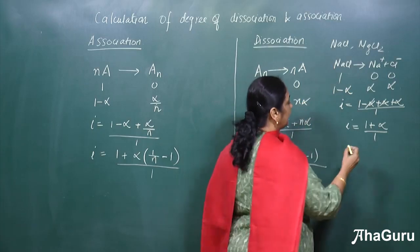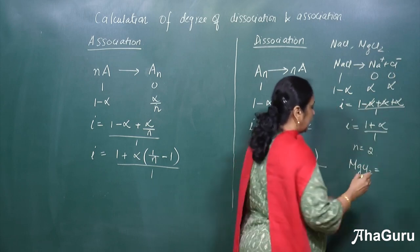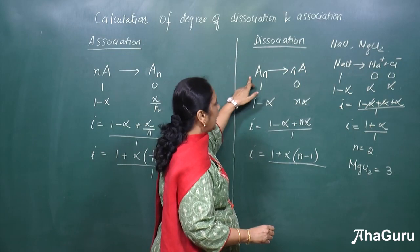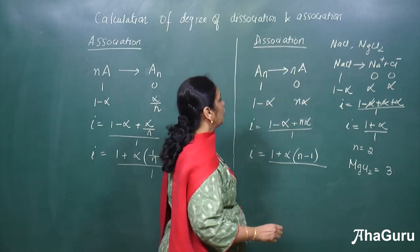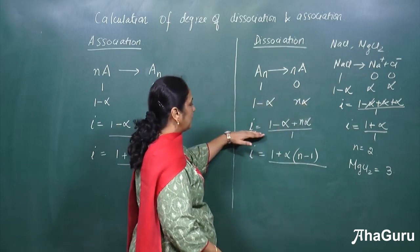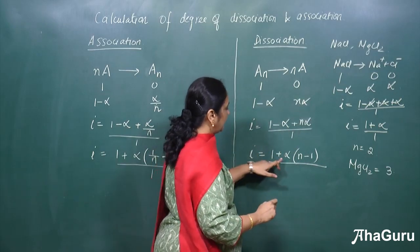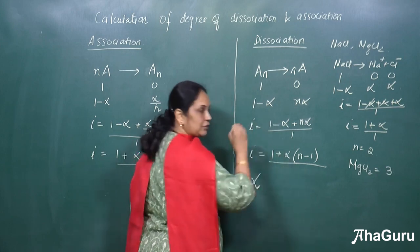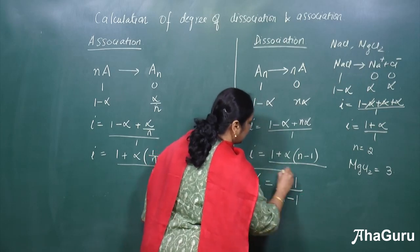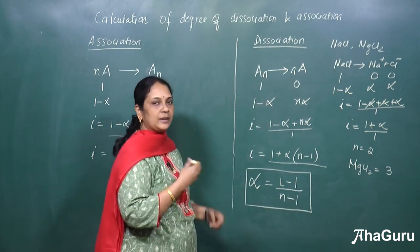For sodium chloride, n = 2 because it dissociates into 2 particles. For MgCl₂, n = 3, and so on. In the generalized form, A molecule dissociates into nA: before dissociation it is 1 and 0; after dissociation it is (1 − α) and nα. So i = (1 − α + nα) / 1 = 1 + α(n − 1). Therefore, the degree of dissociation α = (i − 1) / (n − 1). This applies to electrolyte molecules like sodium chloride, magnesium chloride, and other electrolytes.